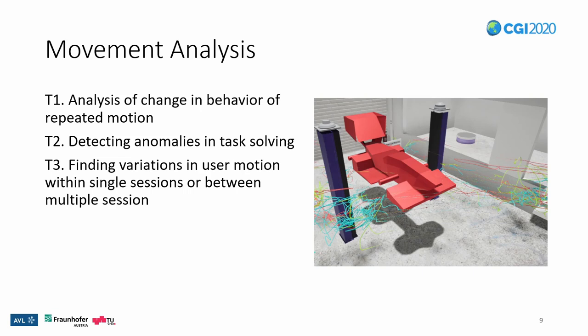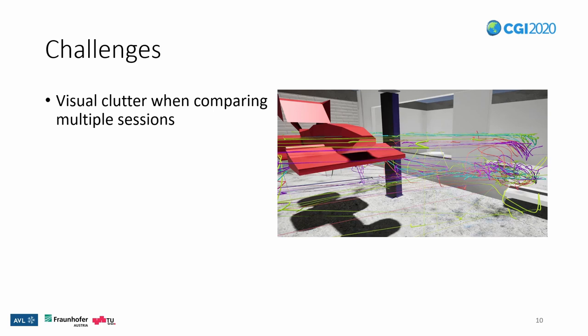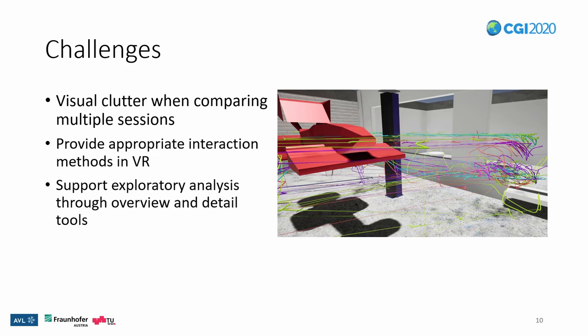With these goals and our visualization choice come a few challenges. The most immediate one is visual clutter — visualizing the movement of multiple sessions can quickly become overwhelming. Virtual reality offers a large design space for interactions and we have to define appropriate interactions for the visualization. To support exploratory analysis, we want to provide tools that allow users to gain a quick overview but also let them look at the data in more detail. We also have movement data for the head and both hands, meaning three trajectories that need to be semantically linked together.